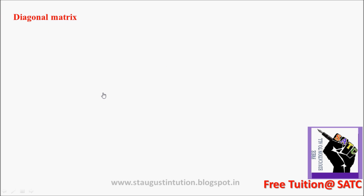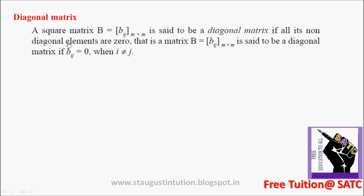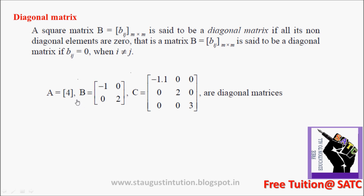Diagonal Matrix: A square matrix is said to be a diagonal matrix if all its non-diagonal elements are zero. That is, a matrix is said to be a diagonal matrix if the element B(i,j) equals 0 when i is not equal to j. All non-diagonal elements are 0 — then it is known as a diagonal matrix.